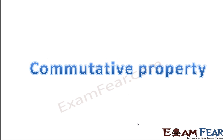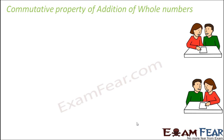Let us now move on to the next property, that is commutative property. What does the word commutative mean? It is derived from the word commute. Commute means to exchange. Many a times you would have heard people saying that every day I commute from my home to my office. So commute is basically exchange of place. Your place is exchanging from home to office, office to home. So the word commute is related to exchange.